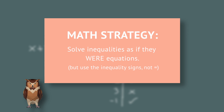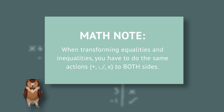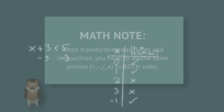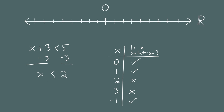Instead, we're going to solve this much like an equation — get x on a side by itself. To do that, we subtract 3 from both sides of the inequality. This uses the most important principle in algebra: if you do something to one side, you have to do the exact same thing to the other side. Simplifying, x plus 3 minus 3 is just x, so we get x is less than 2. This describes all the solutions — any number less than 2 is a solution.